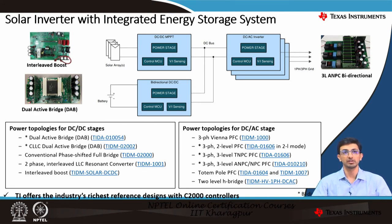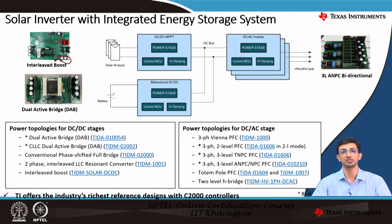Coming back to the device topologies provided for the DC-DC stage and DC-AC stage, these look much the same since most topologies involve bi-directional power flow. For DC-DC, we have the dual active bridge, the CLLC dual active bridge, and others. For the DC-AC stage, we have a three-phase Vienna PFC, three-phase two-level PFC, TNPC, ANPC, totem pole PFC, and a two-level edge bridge. TI offers the industry's richest reference designs with C2000 controllers, all available with the C2000 digital power SDK.